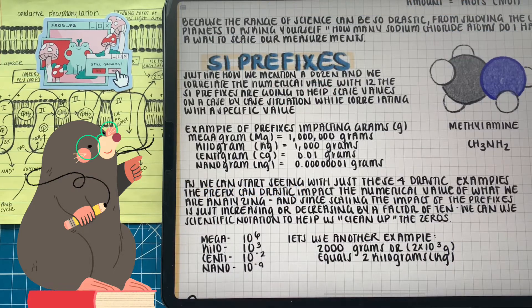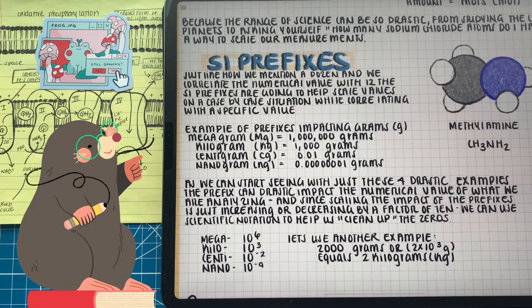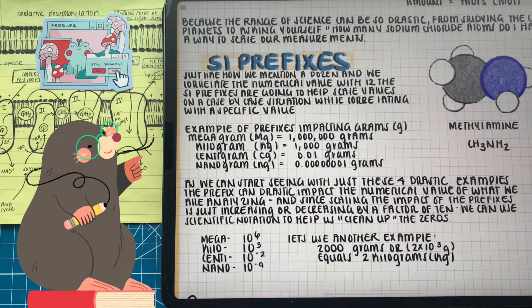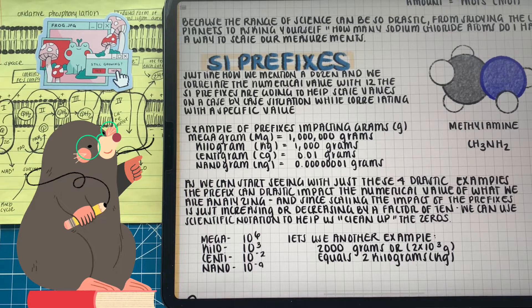Don't worry about not getting a grasp on the SI prefixes and base units just yet. The best way to familiarize yourself with this information is through practice problems. After we talk about the concepts of some of these mathematical relationships and stoichiometry, we're going to do some practice problems and digest and go step by step.